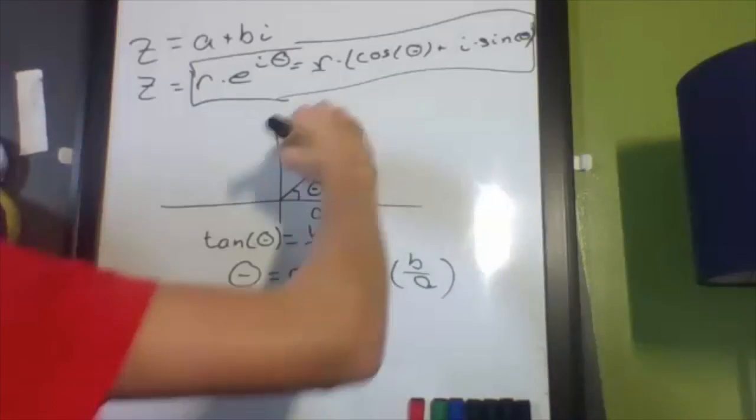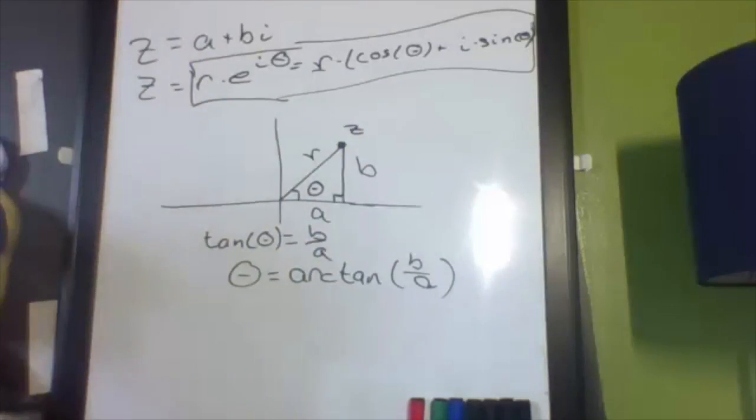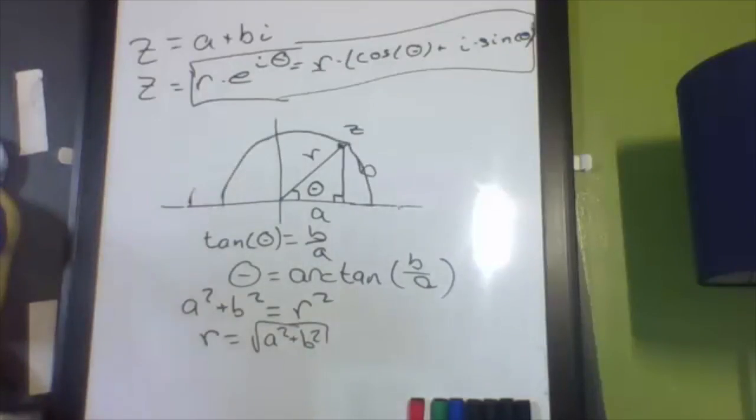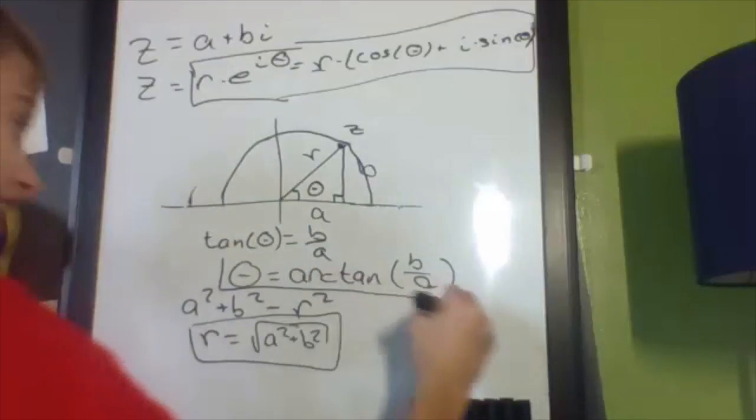Now, what about this distance r right there? Well, you just use Pythagorean Theorem. a squared plus b squared equals c squared, but in this case it's going to be r squared. And then I get r equals the square root a squared plus b squared. So that's your circle of radius r that you're moving theta along. And I figured out what the circle's radius is, and I figured out what the angle is.